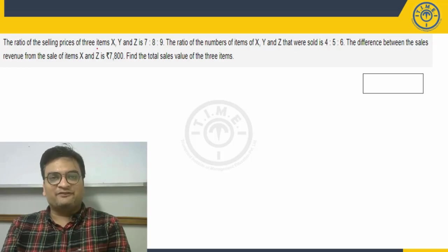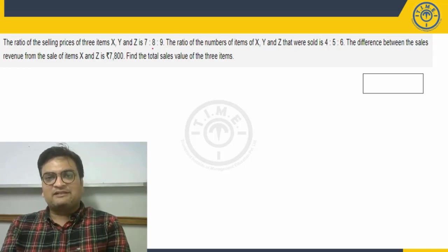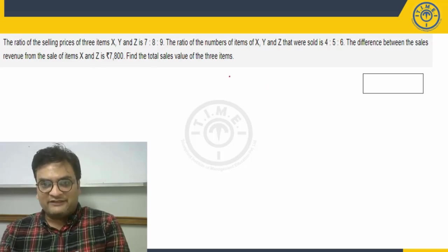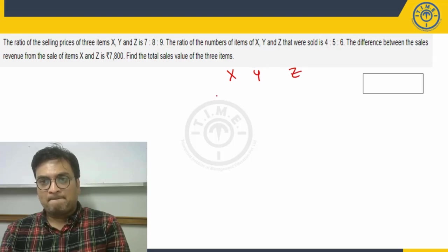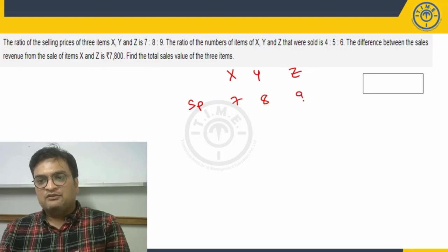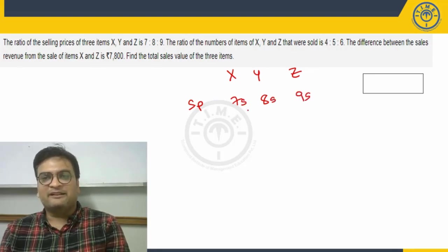The question says the ratio of selling price of three items X, Y, and Z is 7 is to 8 is to 9. So ratio of selling price of three items X, Y, Z is 7 to 8 to 9. If I take the selling price as 7s, this will become 8 into s, this will become 9 into s.